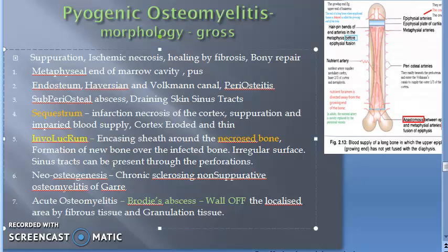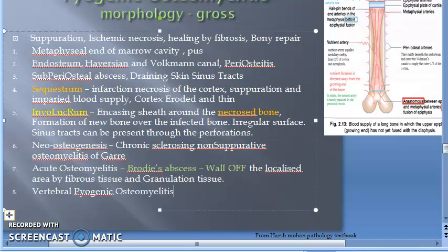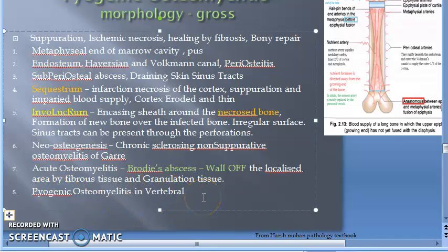Vertebral pyogenic osteomyelitis: in vertebral pyogenic osteomyelitis, infection begins from the disc and spreads to involve the vertebral bodies. So if pyogenic osteomyelitis occurs in the vertebral column, discitis happens first, and then the vertebral bodies get involved.